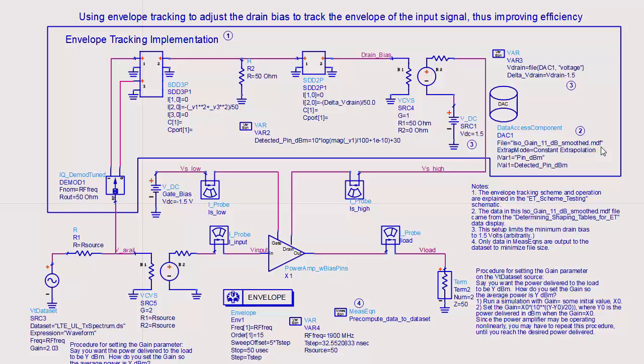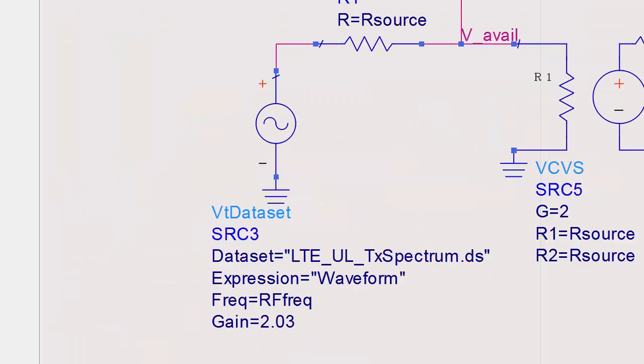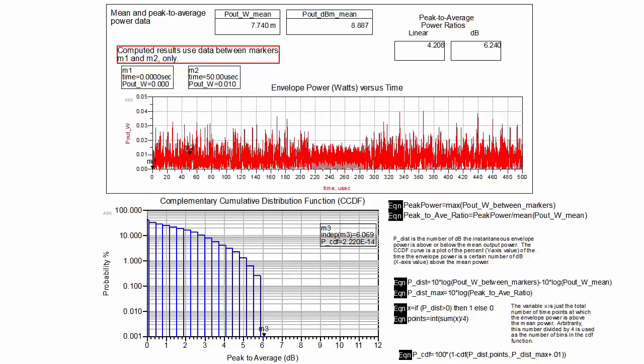In a real envelope tracking system, these components would be replaced by an envelope tracking power supply. The source in this case reads data from a separate simulation. You can use various types of modulated signals or even baseband I and Q data versus time. You will want to examine the statistics of your signal before using it in an envelope tracking simulation for the first time.